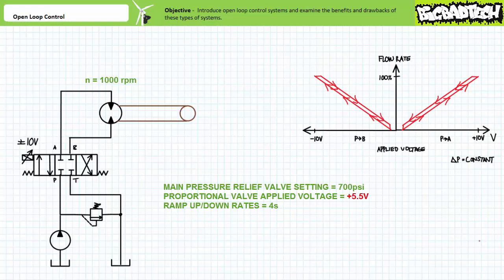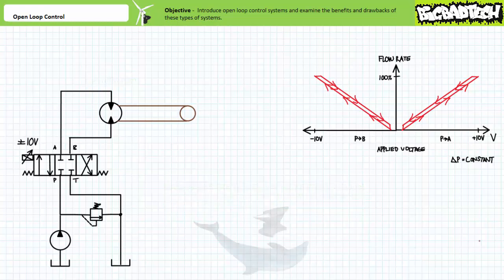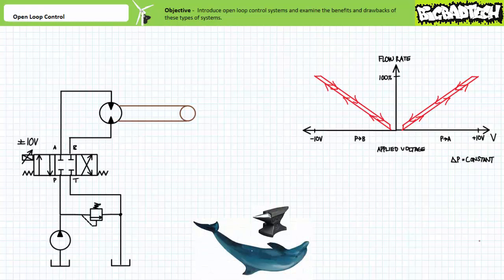A human operator must constantly supervise and direct performance. An open loop control system has no idea what it's doing and doesn't take the time to check if its output is dangerous, let alone achieving the desired goal. Given a larger applied voltage and dramatically reduced load-induced opposition, flow rate and actuator speed could dramatically increase to the point of catastrophic failure. By the way, do not attempt to deliver anvils via dolphins — turns out dolphins require regular intakes of air.